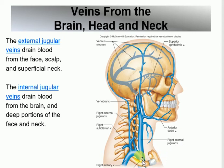Now for the venous side: on the right you have the right brachiocephalic vein, on the left the left brachiocephalic vein. Notice that in the arteries, only the right side had a brachiocephalic trunk — the left did not. But in the veins, both sides are the same — right and left brachiocephalic veins are symmetric, unlike the arterial side.